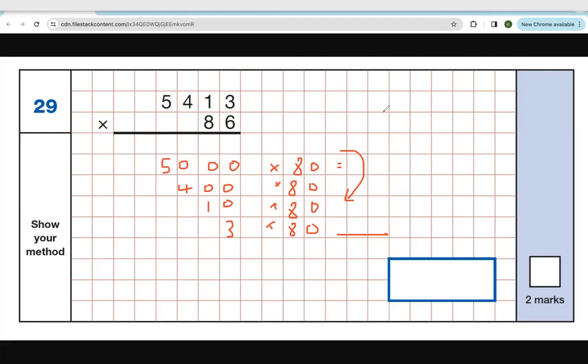And then you can do the same again. You can say three times six, ten times six, four hundred times six, five thousand times six. Because you get so much working out, it can get very confusing.